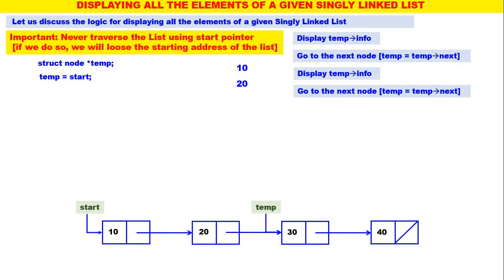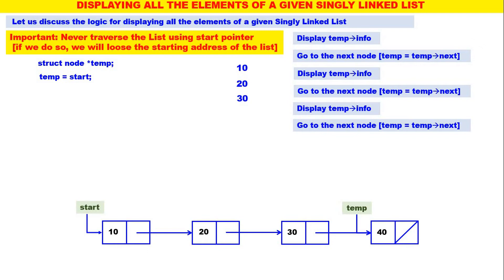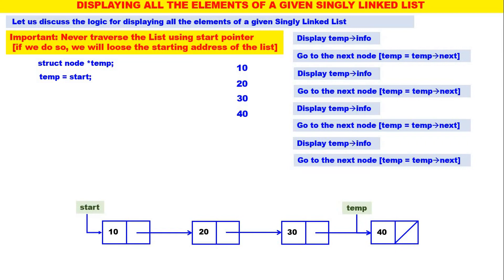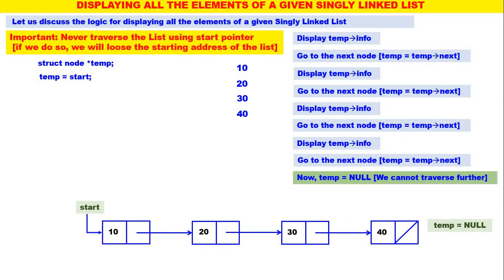Again temp should move to the next node: temp is equal to temp of next. Now temp is containing the address of node 30. Therefore display temp of info — so 30 will be displayed. Then move temp to the next node: temp is equal to temp of next. Now temp is containing the address of node 40. Display temp of info — 40 is displayed. Then move temp to the next node: temp is equal to temp of next. But now temp of next is null, therefore temp will become equal to null. We have traversed the complete linked list and displayed all the elements 10, 20, 30, 40.